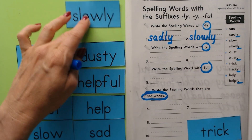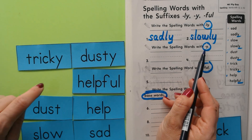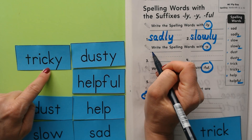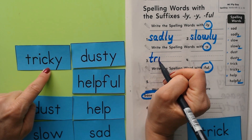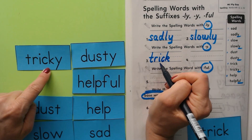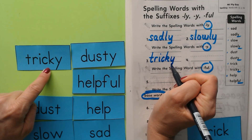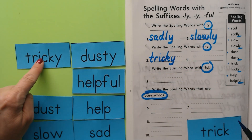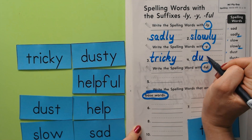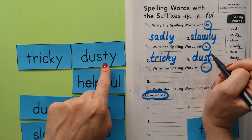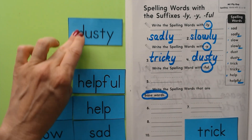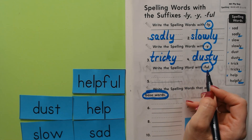Now we're going to do our words with the -y suffix. Tricky: our base word is trick — T, R, and then two letters C and K make the K sound — then we add -y. We use a Y for the suffix. And we have dusty — done with tricky and dusty.